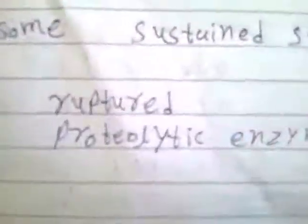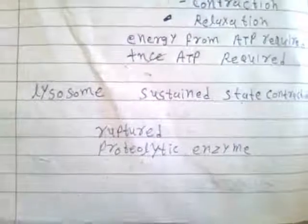Why is rigor mortis reversible? After a few hours, lysosomes rupture. Lysosomes contain hydrolytic and proteolytic enzymes. Proteolytic means they lyse the protein — they destroy the protein. The proteins in question are actin and myosin. So after some hours, proteolytic enzymes are released from the lysosomes due to their rupture. These proteolytic enzymes lyse the actin and myosin proteins — actin and myosin themselves are broken down — and the rigidity disappears. That is how rigor mortis is reversible.